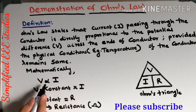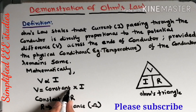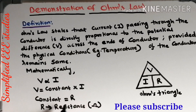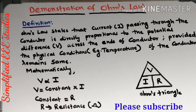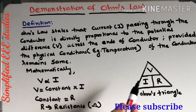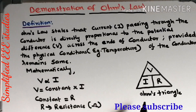To remove the proportionality constant, we can write voltage is equal to R into I. This constant R is the resistance of the conductor, expressed in ohms, where voltage is expressed in volts and current is expressed in amperes. By considering these three quantities — voltage, current, and resistance — we can frame one triangle known as Ohm's triangle.